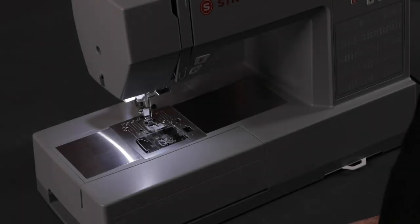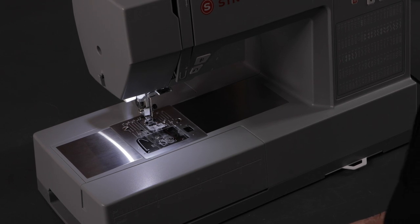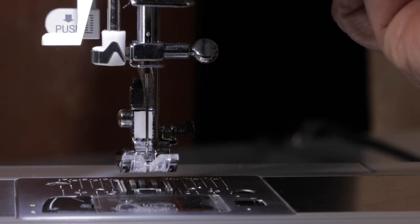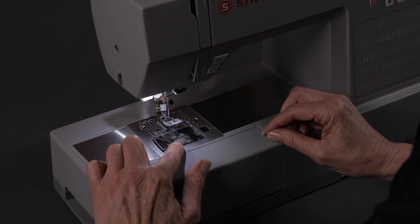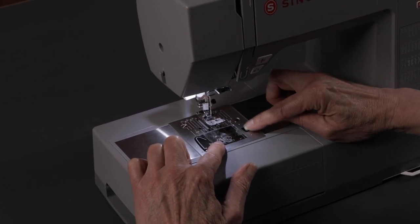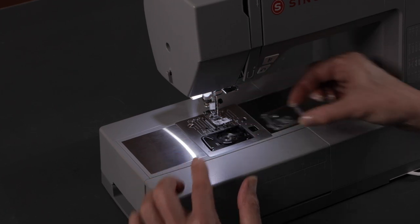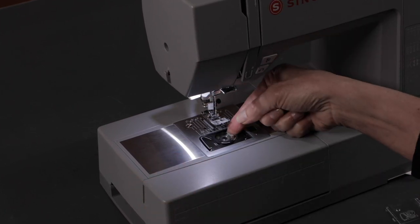To thread the machine, the first thing we're going to do is wind a bobbin. To wind a bobbin we need to retrieve the bobbin from our bobbin case. Raise the presser foot lifter, put a finger on the corner here and push this button. This is your bobbin cover release button. Press that and it will release the cover and you can retrieve your bobbin.